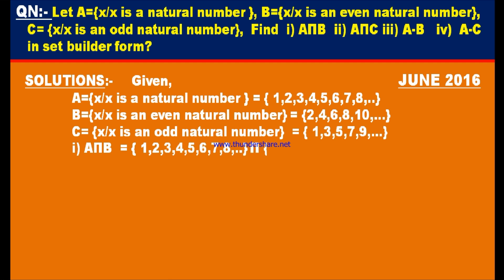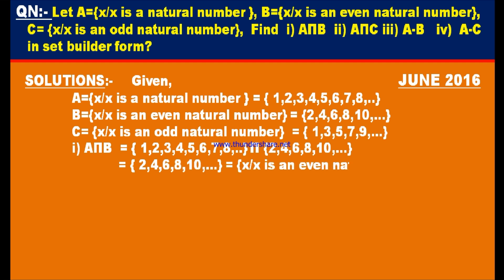First bit: A intersection B. A = {1, 2, 3, 4, 5, 6, 7, 8, ...} intersection B = {2, 4, 6, 8, 10, ...}. The common elements are 2, 4, 6, 8, 10, and so on — these are all even natural numbers. Therefore, in set builder form, A intersection B = {x | x is an even natural number}.